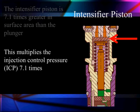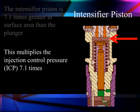This multiplies the injection control pressure — which is high-pressure oil — by 7.1 times. Now let's talk about this high-pressure oil control. High-pressure oil is variable; we're going to control the pressure level. It's going to vary from 500 up to 4,000 PSI. That variation is going to give us the difference in fuel injection pressures. At high pressures, we inject more fuel than we do at low pressures. So we can control fuel delivery by controlling pressure, and we're going to use this 7.1 times to do that.